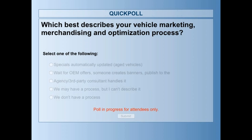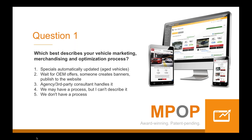Understand that most dealers today are not updating their OEM incentives, bank incentives, used car offers, or service specials regularly. If they are doing it, they might be doing it with one offer, not multiples. The more offers, the more relevant it can be to customers searching. You might be interested in a zero-down lease; I might want discounts; someone else wants savings. By creating multiple offers the way people are searching, it increases relevance, which means higher click-through rates, lower cost per click, and better conversion.